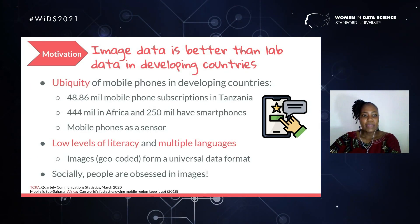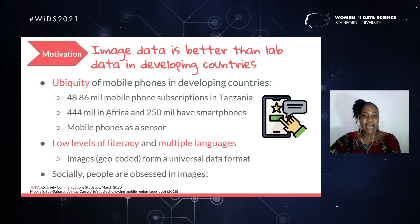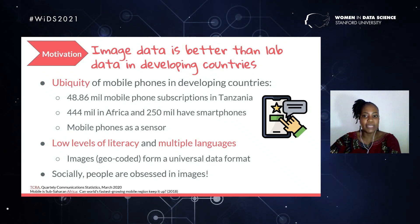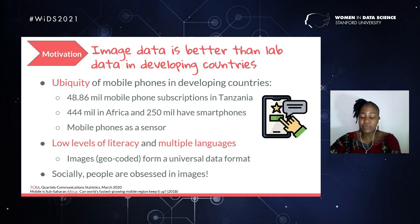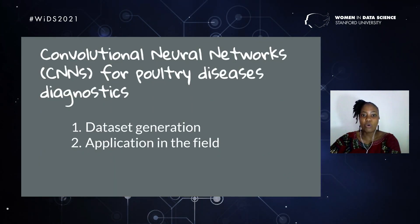Therefore, as a data scientist, I was really motivated to extend the use of the most ubiquitous item in our context — which is the cell phone — to address the challenge of poultry disease diagnostics. The kind of data that we see as applicable in our context is images, due to the fact that we have low levels of literacy and multiple languages. We see images as a universal data format, and this brings us to convolutional neural networks for poultry disease diagnostics.